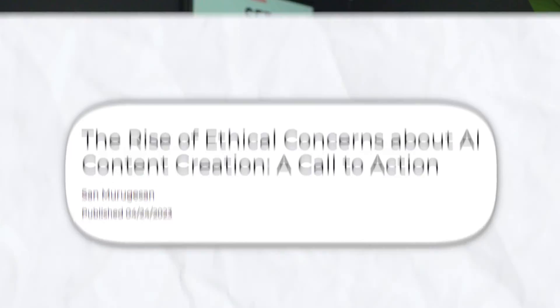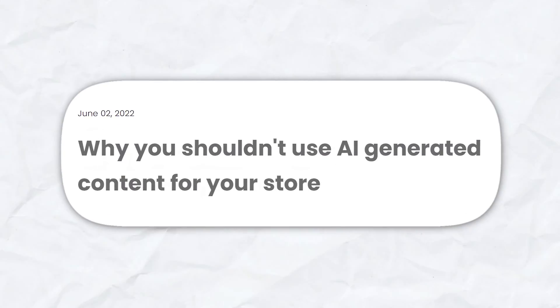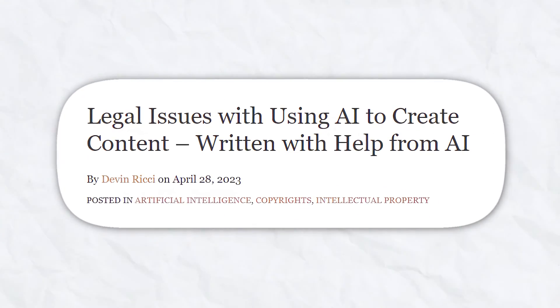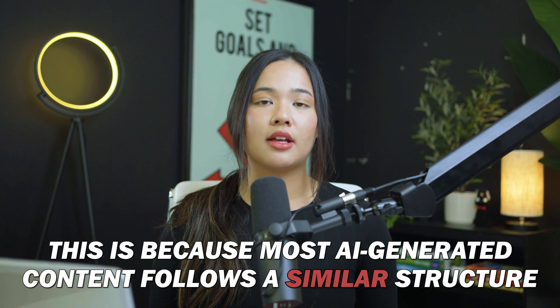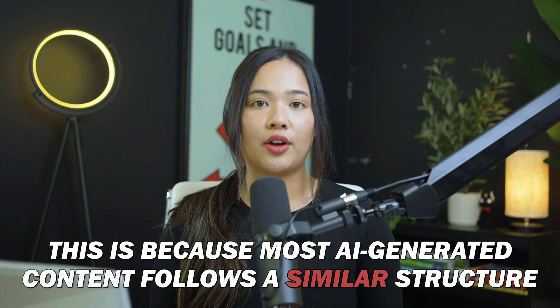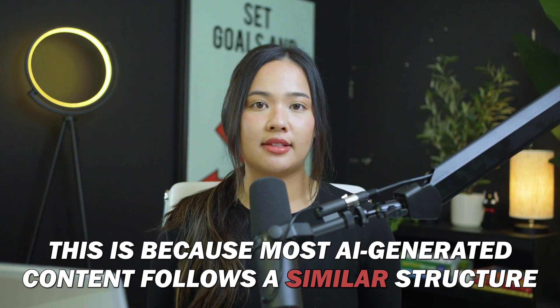You may have seen articles or blogs online telling you not to use AI when producing content because it can be detected. This is mostly because a lot of the content produced by artificial intelligence has the same sentence structure. But there is an AI that you can use so that you don't have to worry about this.